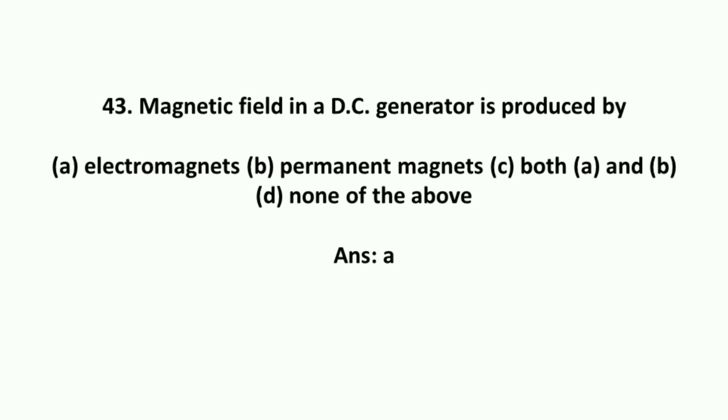Magnetic field in a DC generator is produced by electromagnets.